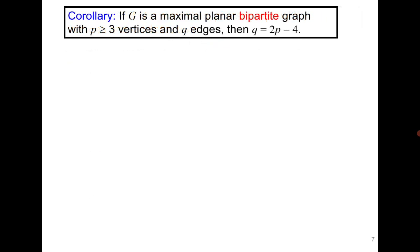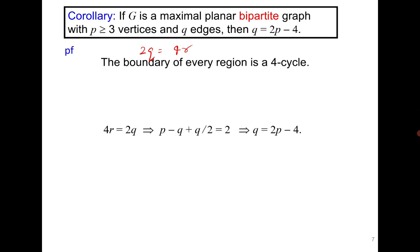One more interesting result: a maximal planar bipartite graph has 2p minus 4 edges. In a bipartite graph, odd cycles are not possible, so triangles are excluded, but cycles of length 4 are always possible and are the shortest. Therefore, instead of 2q = 3r, we get 2q = 4r. By substituting into the Euler formula, you obtain the result q = 2p minus 4.